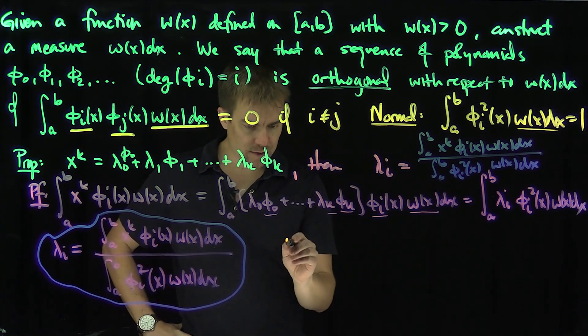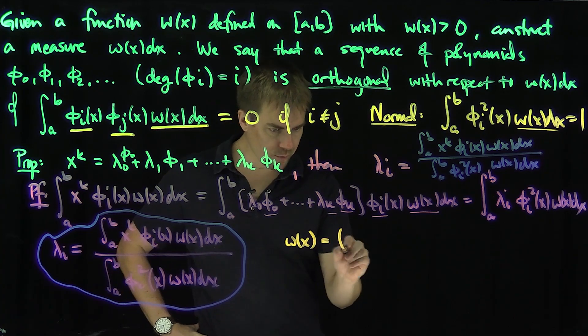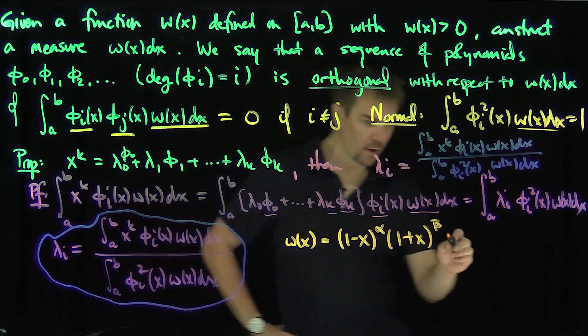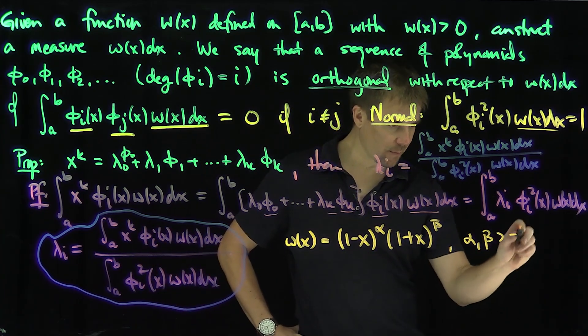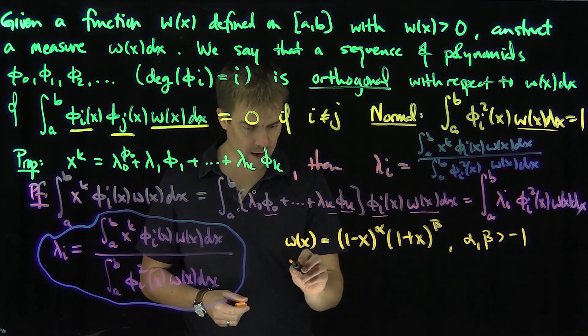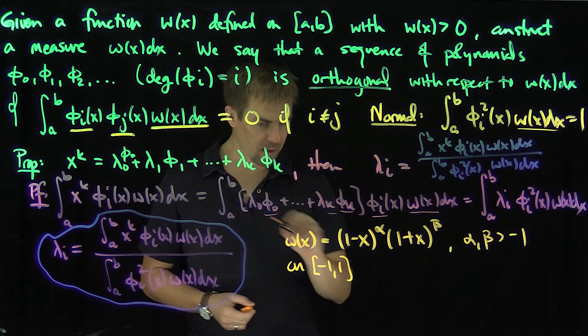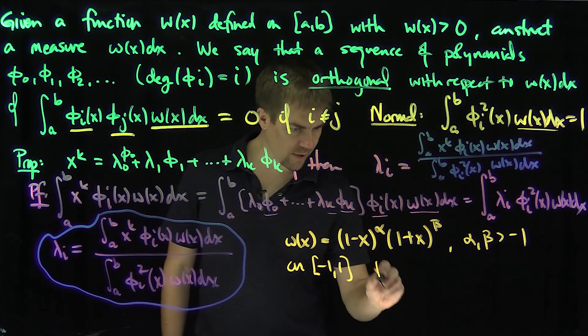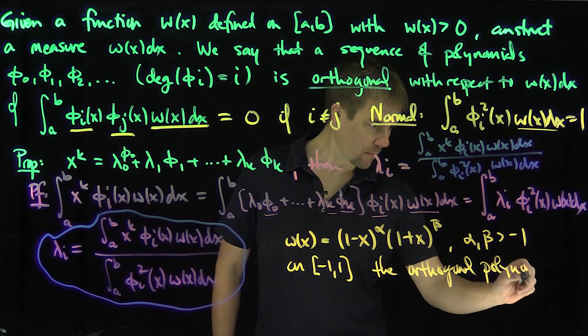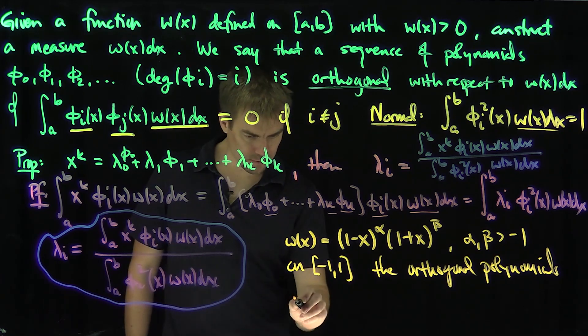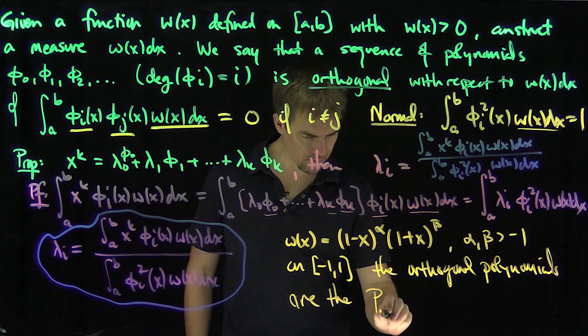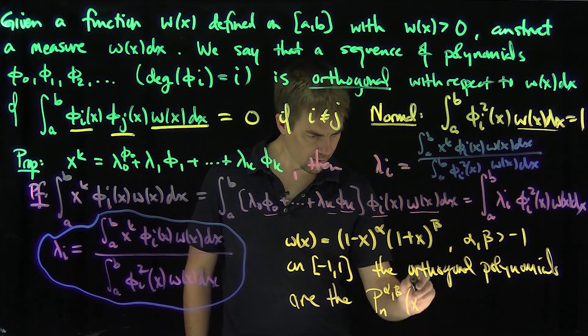And so one final class: if we consider the weight w(x) which is equal to (1-x)^α(1+x)^β, where α and β are both bigger than negative one so it's not singular, that's your weight function. And you run the interval on the interval negative one to one.